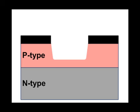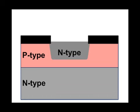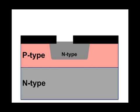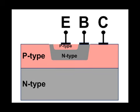The last step is to connect electrical contacts: to the P-type material in the middle — that's the emitter; to the N-type material between the two P-types — that's the base; and then the collector. Notice that the collector surrounds the emitter. When the emitter emits current carriers into the base, because the collector surrounds that whole area, it is easy for the collector to collect those current carriers emitted by the emitter.